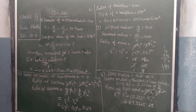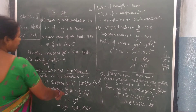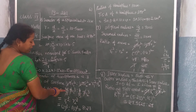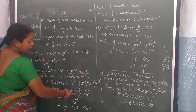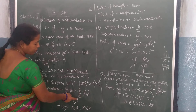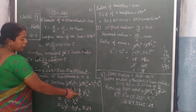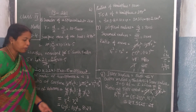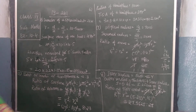Now next, ratio of volumes. What is volume of sphere? 4 by 3 pi r cube. If I take radius of 1st sphere as r1 and radius of 2nd sphere as r2, I will write as 4 by 3 pi r1 cube is to 4 by 3 pi r2 cube. Here 4 by 3 and pi get cancelled, then r1 cube is to r2 cube remains. What is r1? r1 is equal to 2. So 2 cube is to 3 cube, which is 8 is to 27.